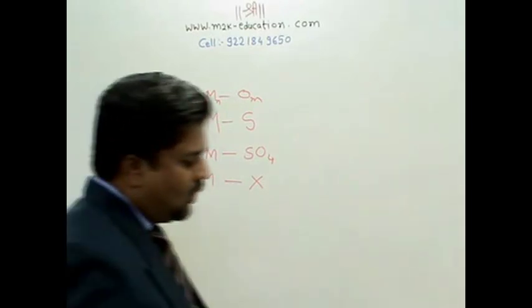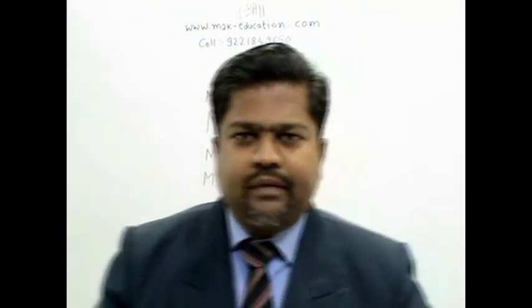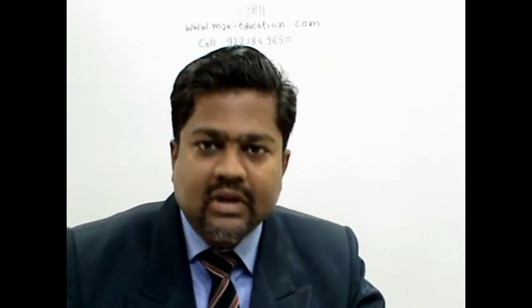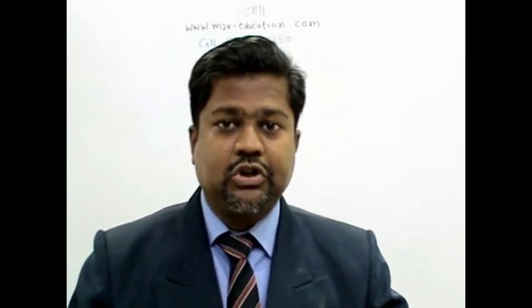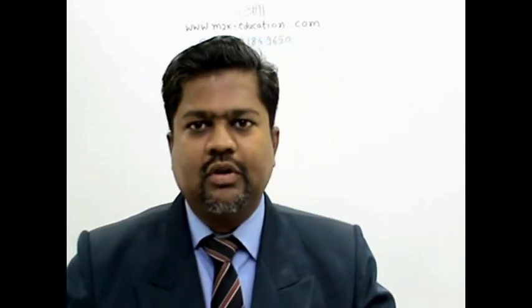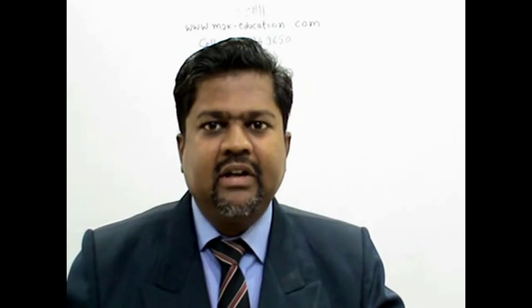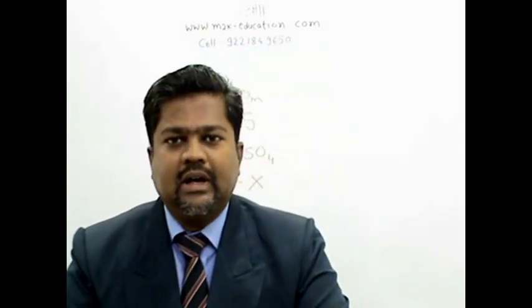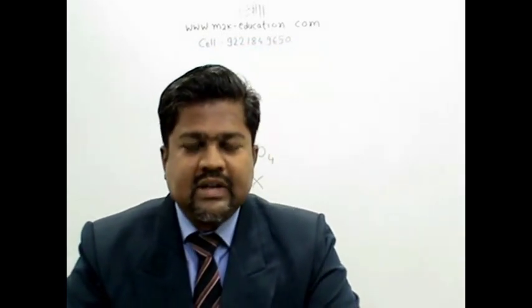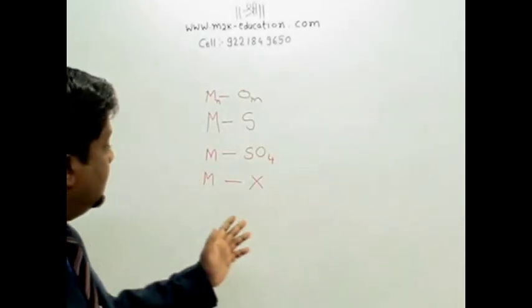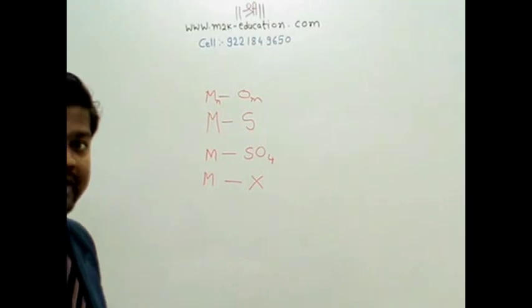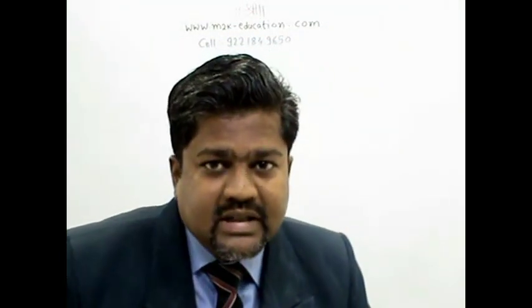Usually ore obtained is in this format. After obtaining ore, there are several processes - concentration of ore, that is purification of ore. Then usually roasting, smelting, calcination, those are reduction processes, electro-refining. Metal is obtained from that, or not necessarily metal - other components are obtained. For example, we can obtain sulfur also as bi-product.